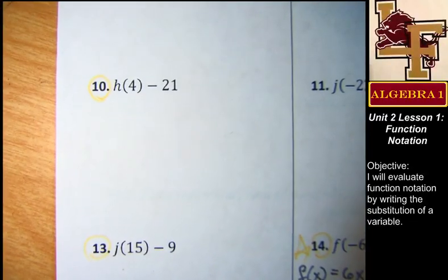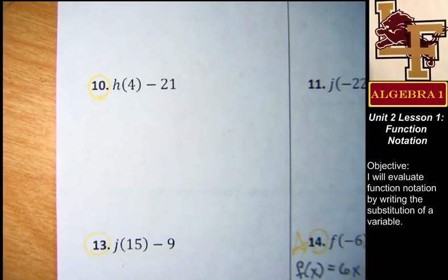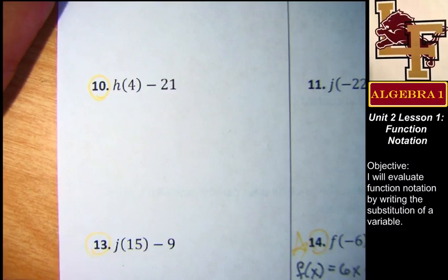That's number 10 from our daily work. This one says h of 4 minus 21.